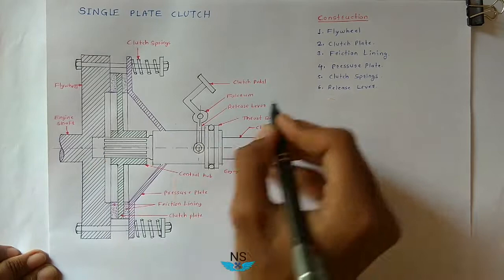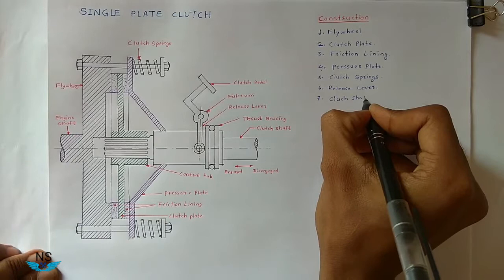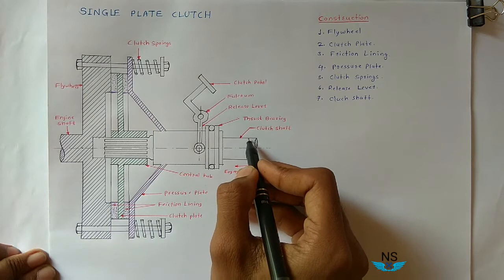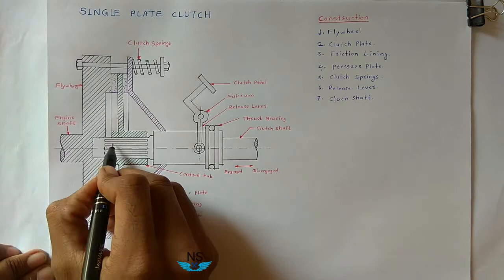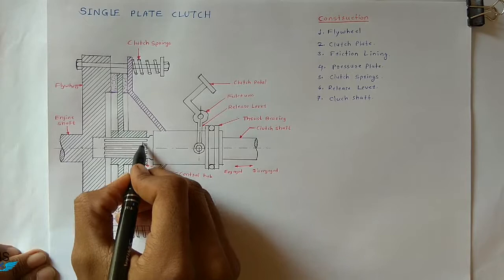The seventh part is the clutch shaft. The clutch shaft is connected to the input shaft of the gearbox, and the clutch shaft is also splined near the central hub.